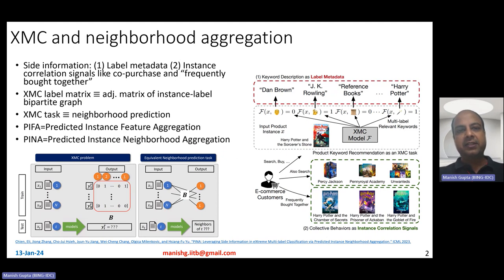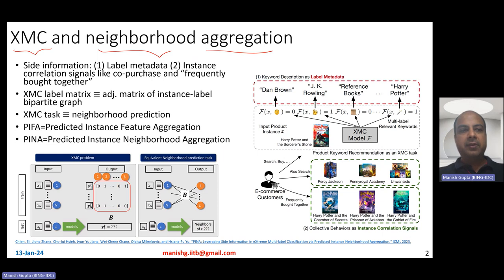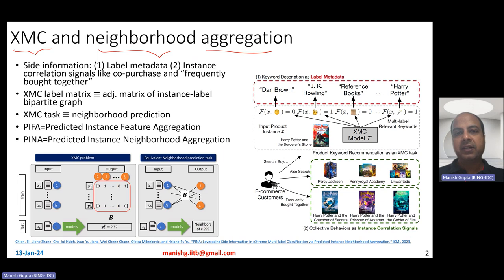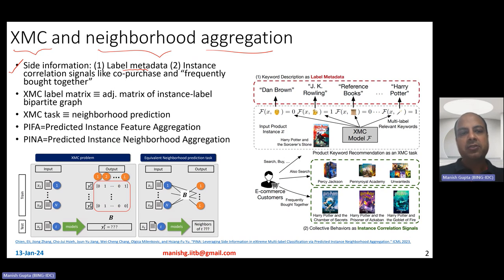First, let's try to establish a relationship between extreme multilabel classification and neighborhood aggregation. How are these two things making sense together? In extreme multilabel classification problems, you have data points that you want to classify in a multilabel manner such that the number of labels are in the millions. Typically, people have experimented with label IDs rather than label text. This paper advocates the usage of side information of two kinds: label text itself, which is label metadata, and also borrowing information from neighbors — specifically, instance correlation signals.